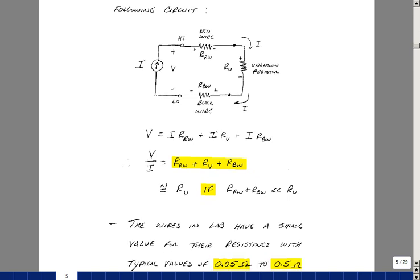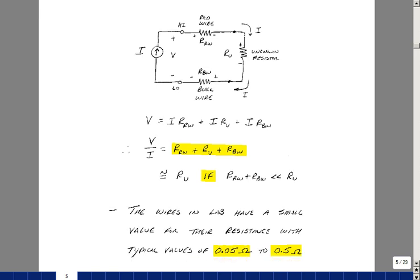The I is common and so what we're really measuring is the resistance of our sample plus the wires. The wire resistance depends on thickness and length. But for most of our wires in lab, we're looking at something between 50 milliohms and 500 milliohms.